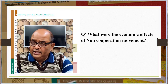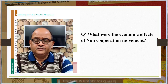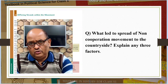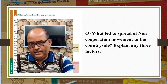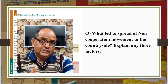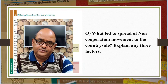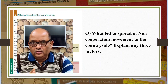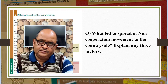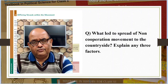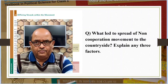Both topics — Rebellion in the Countryside and Swaraj in Plantations — are important. What led to the spread of the non-cooperation movement to the countryside? The peasants had to do begar at the landlord's farm without any payment. The tenants had no security of tenure and were regularly evicted from land. The peasants demanded reduction of revenue, abolition of begar, and boycott of oppressive landlords.